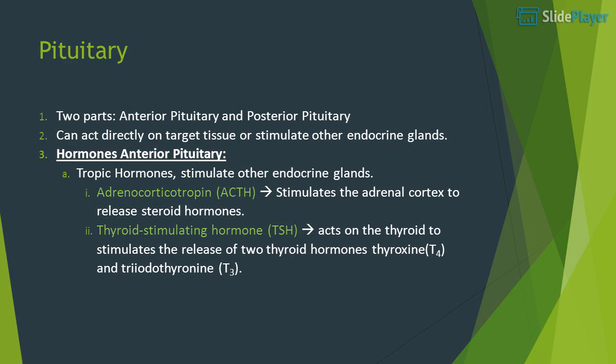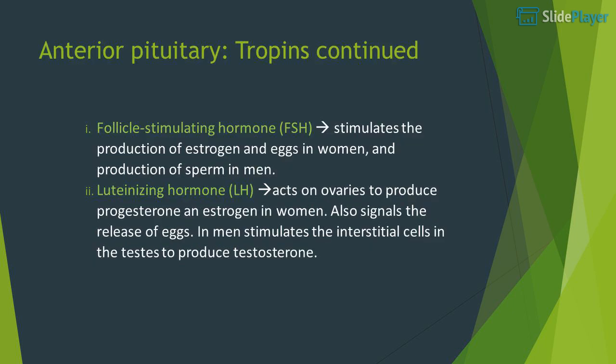Pituitary gland has two parts: anterior pituitary and posterior pituitary. It can act directly on target tissue or stimulate other endocrine glands. Anterior pituitary tropic hormones stimulate other endocrine glands. Adrenocorticotropin (ACTH) stimulates the adrenal cortex to release steroid hormones. Thyroid stimulating hormone (TSH) acts on the thyroid to stimulate the release of thyroxine (T4) and triiodothyronine (T3).